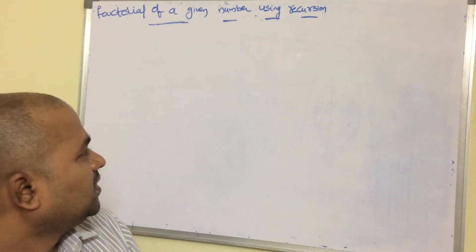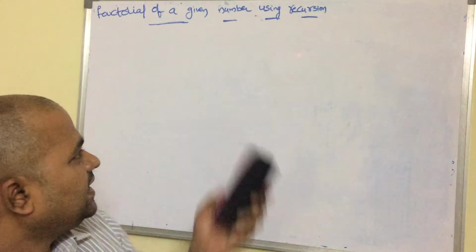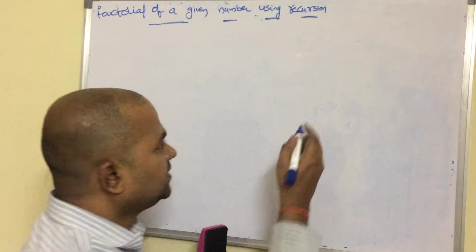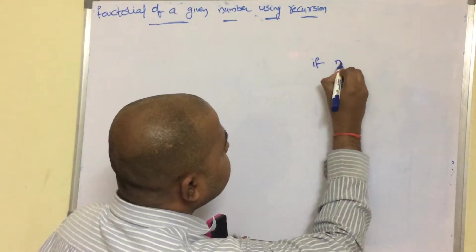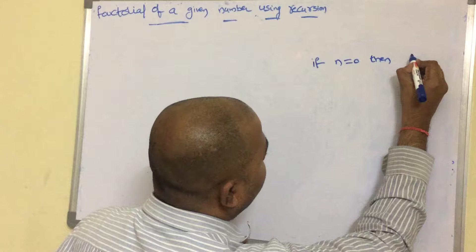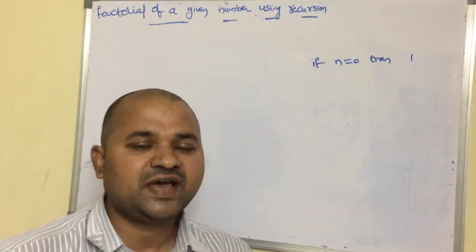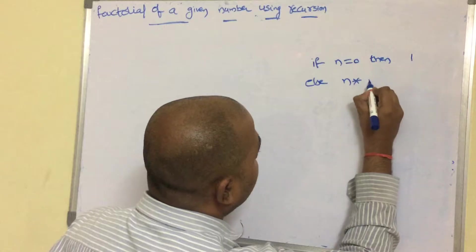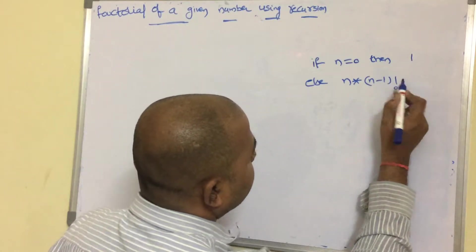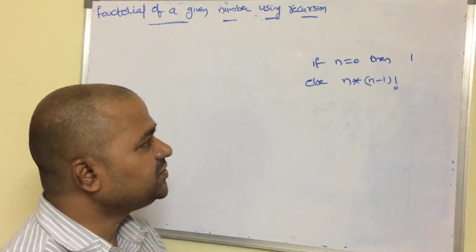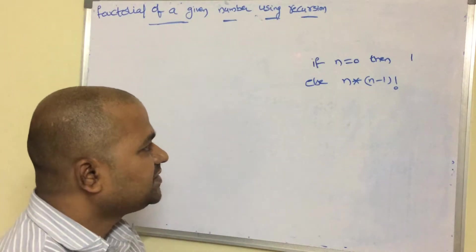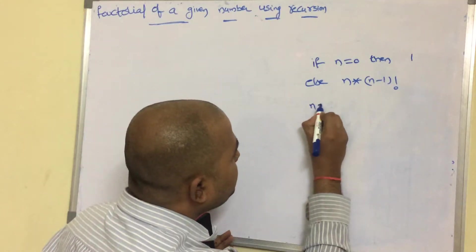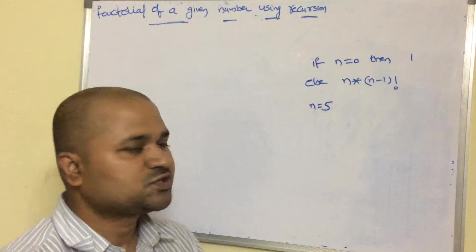Let us see how to calculate the factorial of a given number. If n is equal to 0, then the result is 1, because the factorial value of 0 is 1. The formula is n into (n-1) factorial. So if n is equal to 0, the result is 1; otherwise the result is n into (n-1) factorial.